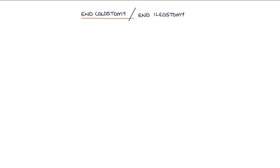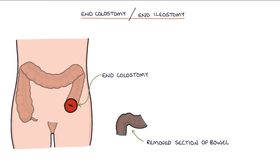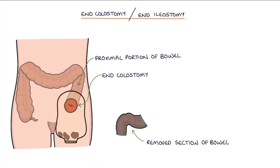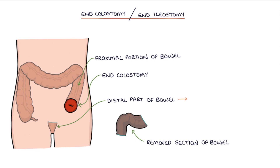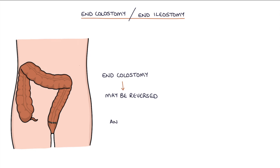Let's talk about end colostomies and end ileostomies. An end colostomy is created after the removal of a section of bowel where the end part of the proximal portion of bowel is brought onto the skin. Feces are able to drain out of an end colostomy into the stoma bag. The other end of the remaining bowel, the distal part, is sutured and left inside the abdomen. An end colostomy may be reversed at a later date where the two ends are sutured together to create an anastomosis.